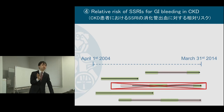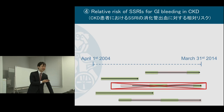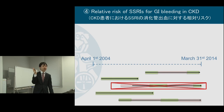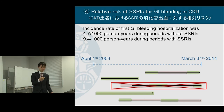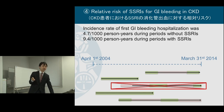I still had the option to use a case-crossover design, because the case-crossover design does not require that condition — as Ian will discuss later. But I didn't use it this time. Also, I needed to estimate the absolute incidence rate, and in self-controlled case series or case-only design, the absolute incidence cannot be estimated because you only include patients with the outcome. So while case-only design could be an option to estimate relative risk, I didn't use it.